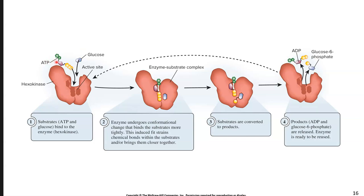You have an enzyme with a few substrates that are going to bind. That enzyme undergoes a shape change or conformational change. Those substrates are then converted to a product, and then your enzyme is prepared to do this again.